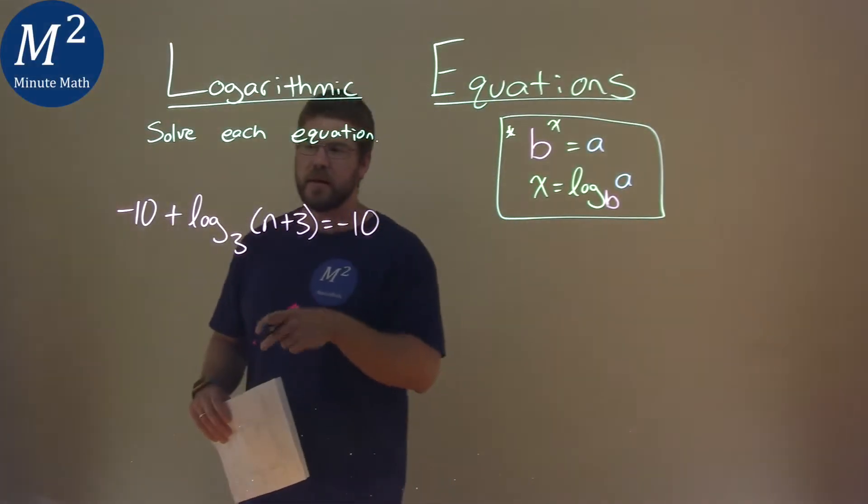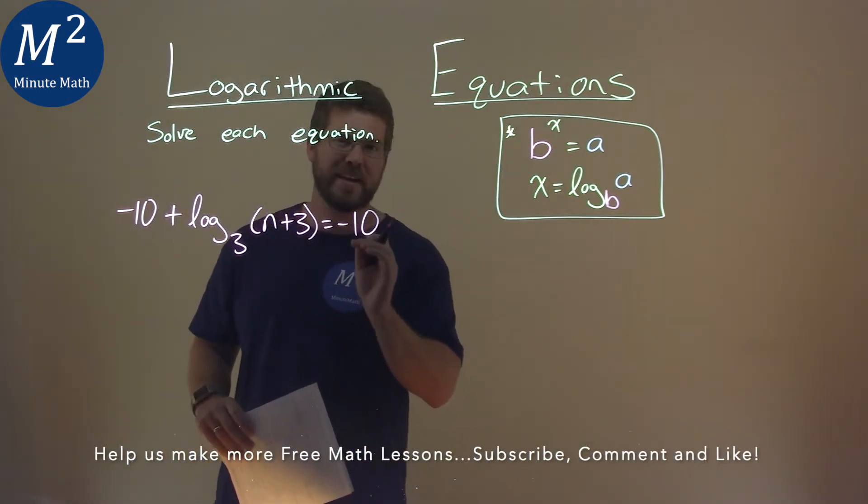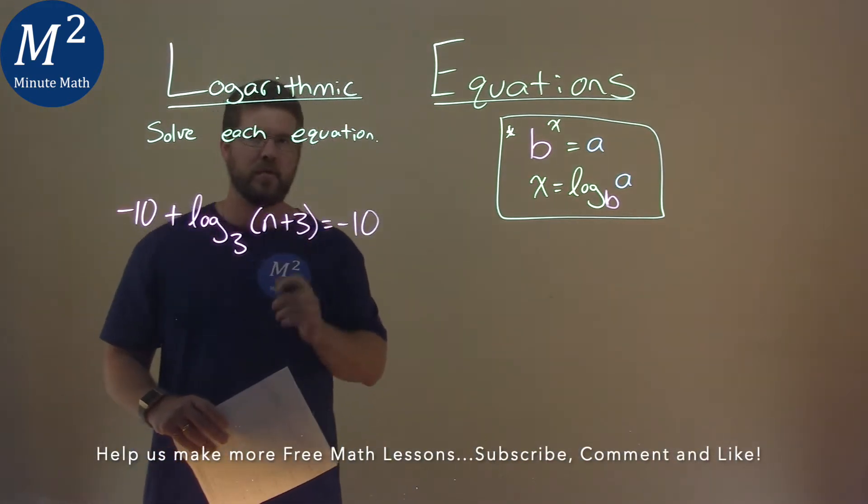We're given this problem right here: negative 10 plus log base 3 of n plus 3 equals negative 10, and we have to solve this equation.